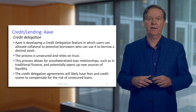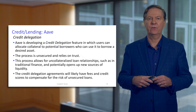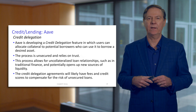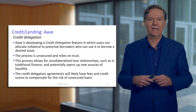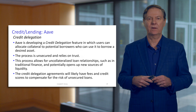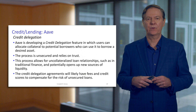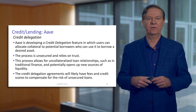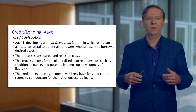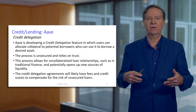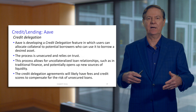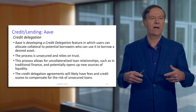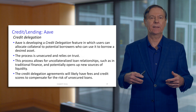In traditional finance, for instance, if I've got a house, I pledge the house and take a home equity loan out — I'm pledging that collateral. There's a different type of loan in traditional finance where you don't necessarily pledge that collateral, like a line of credit.